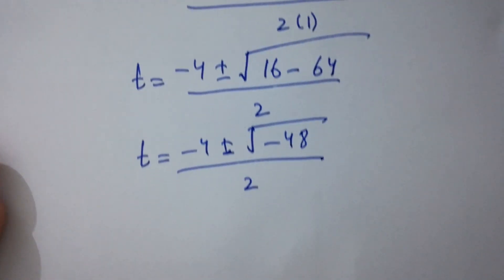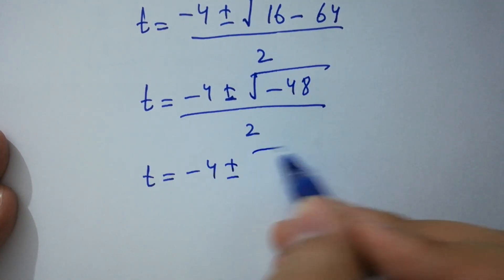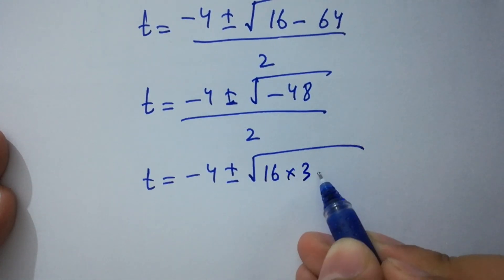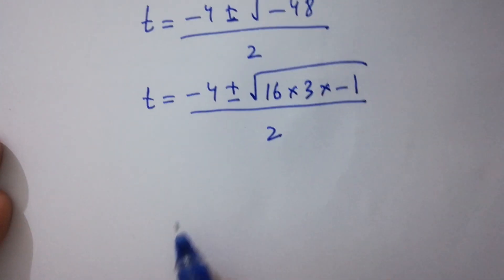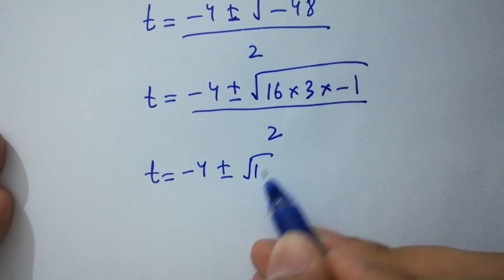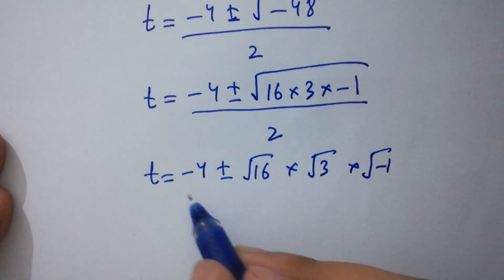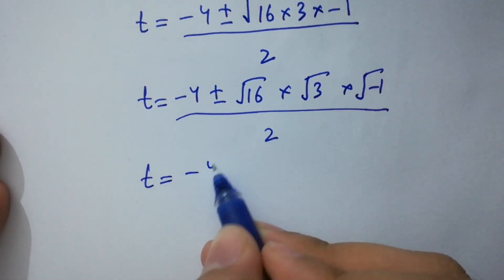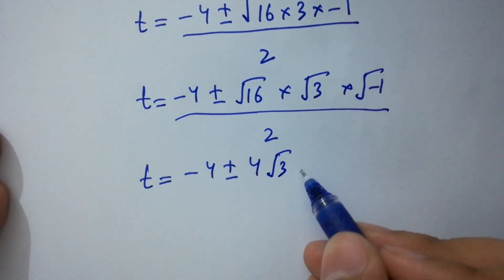t equals minus 4 plus or minus square root of minus 48, which is the same as square root of 16 times 3 times minus 1 over 2. Next, t equals minus 4 plus or minus square root of 16 times square root of 3 times square root of minus 1 over 2. The square root of 16 is 4, and square root of minus 1 is i from complex numbers.